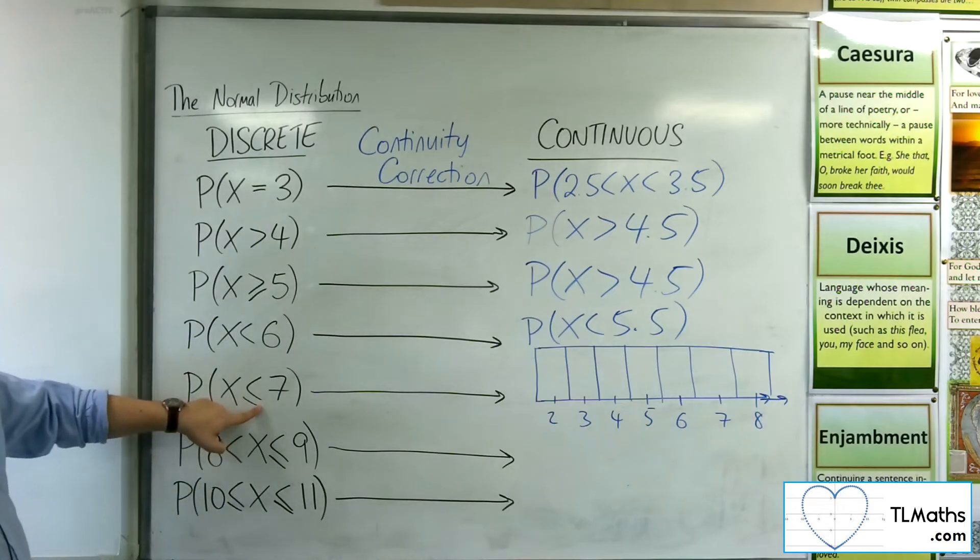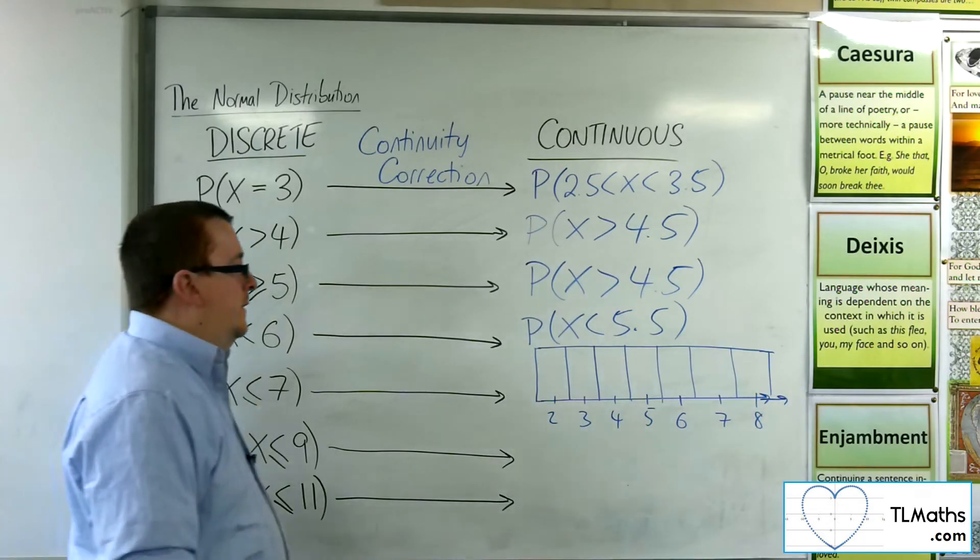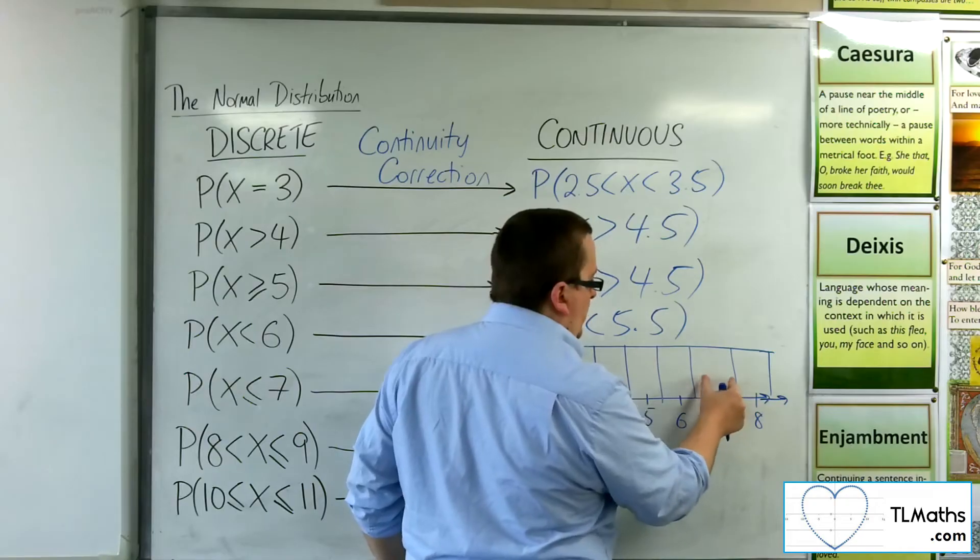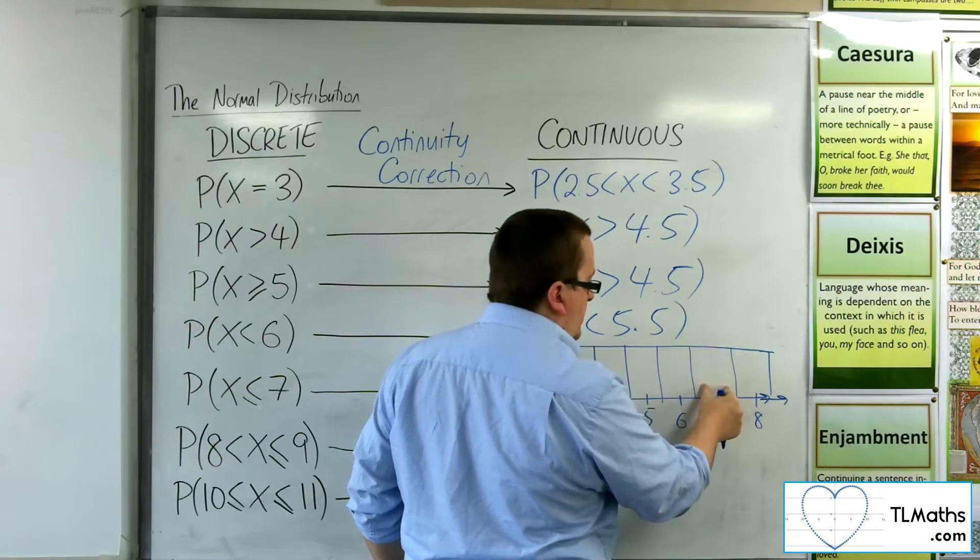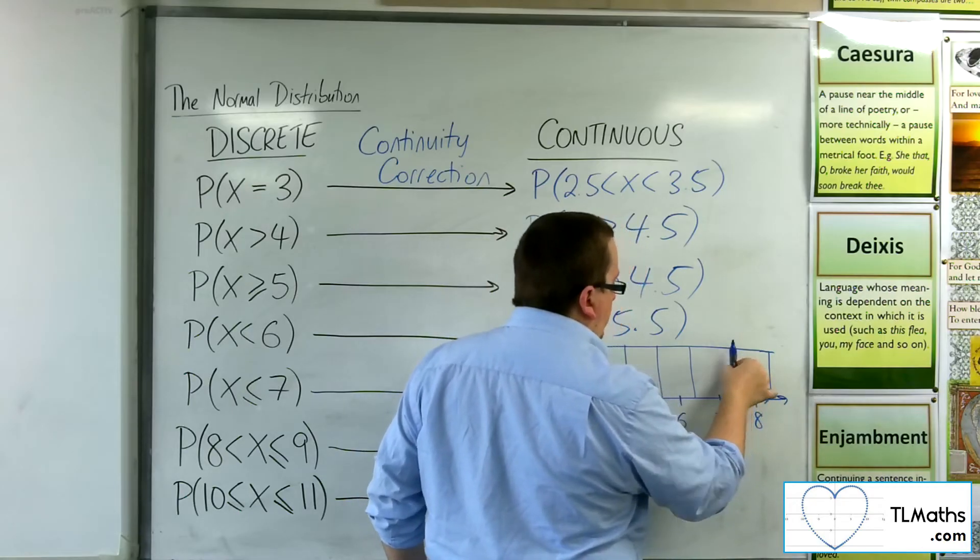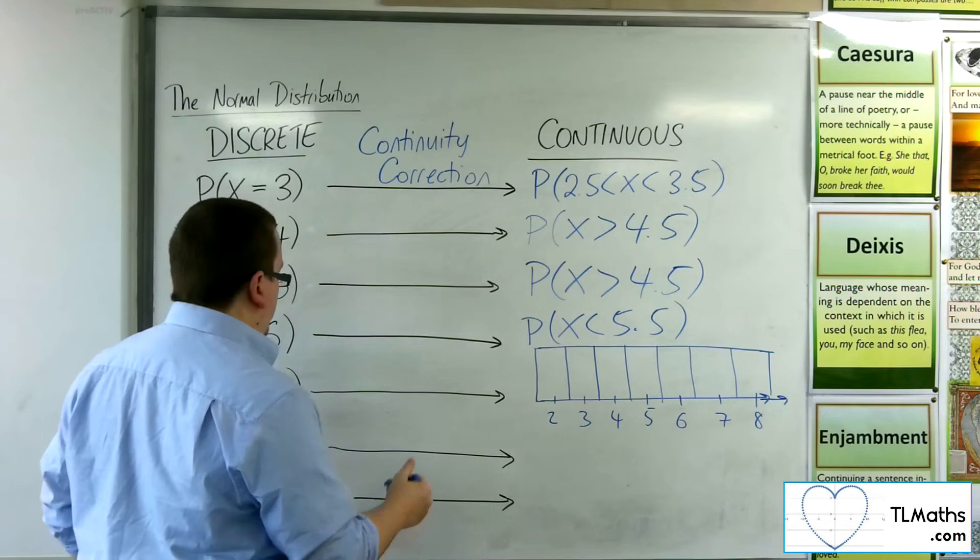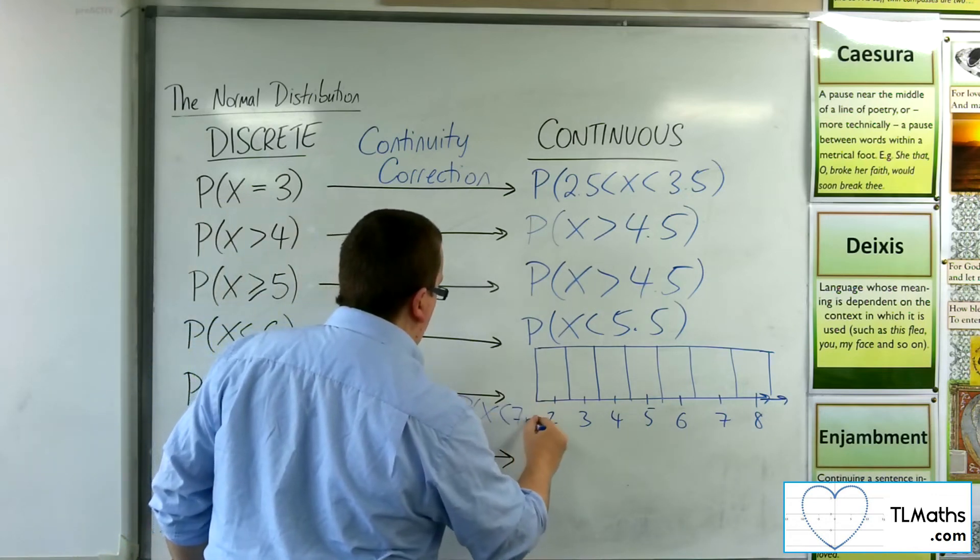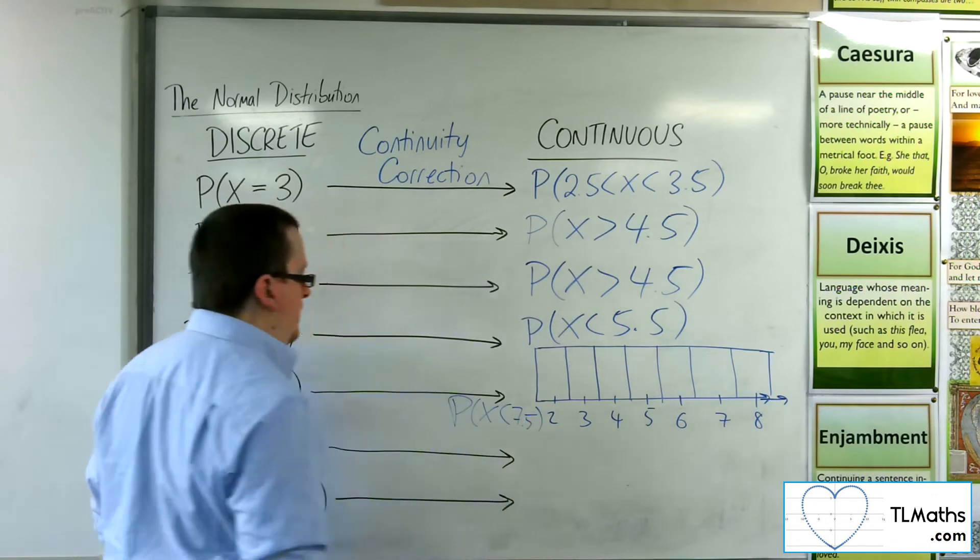Probability of X being less than or equal to 7. So less than or equal to that value, from that bar downwards. I'm including the bar, and so I would be from that point downwards. So it's at the 7.5. That's the probability of X being less than 7.5 for that one.